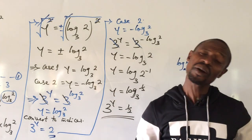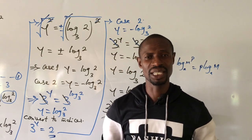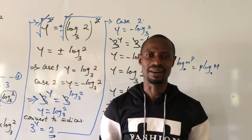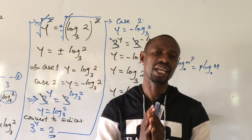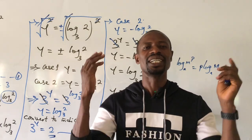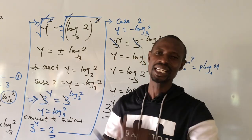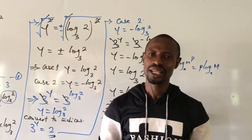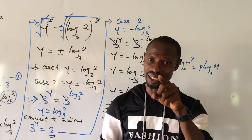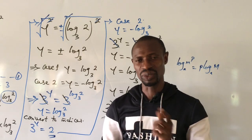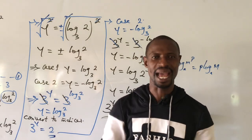So the two cases give us: 3 to the power of y equals 2, and 3 to the power of y equals 1 over 2. This is all I have for you today. If you learned something, drop it in the comment section. If you like what we do here, give our video a thumbs up. Don't forget to subscribe if you are new here, because we drop new videos every day. Thanks for your time, bye for now.